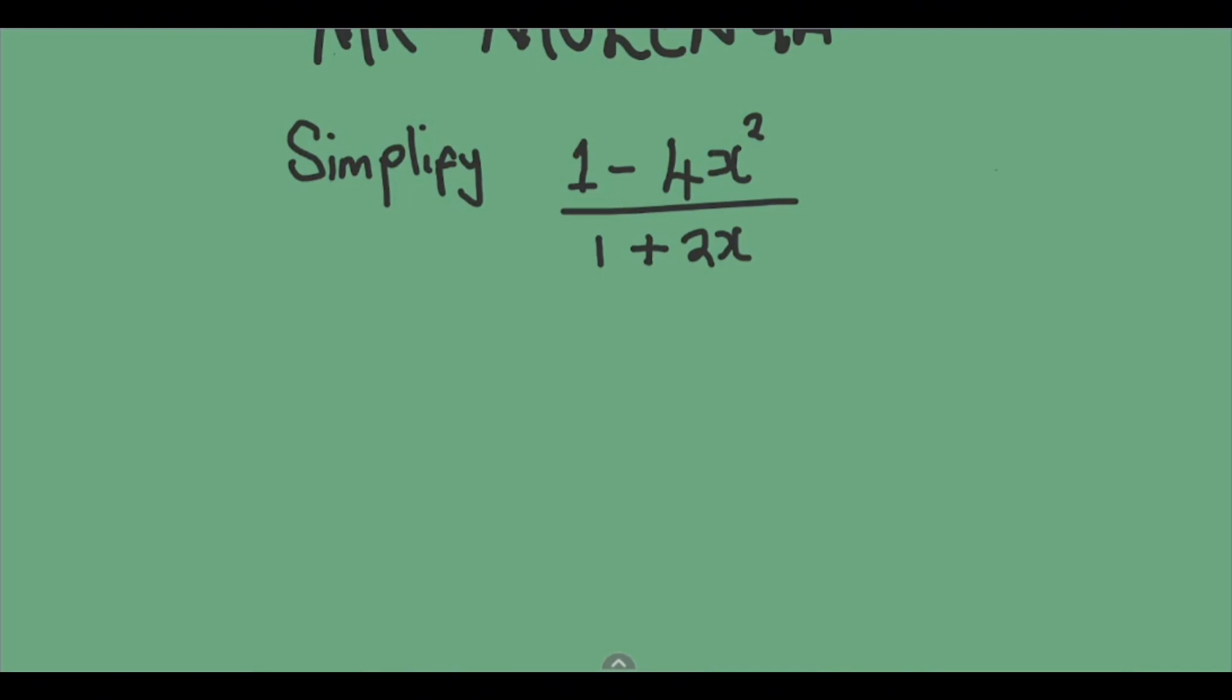So our question is 1 minus 4x, which is 1 minus 4x squared over 1 plus 2x. For this question, we can see that the x right here is squared.